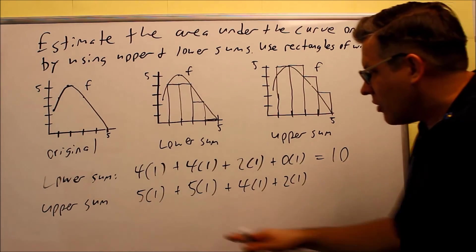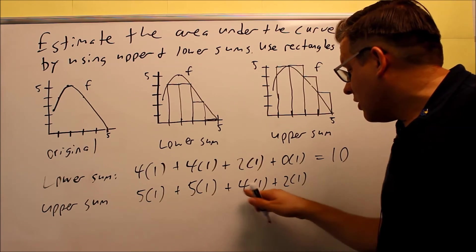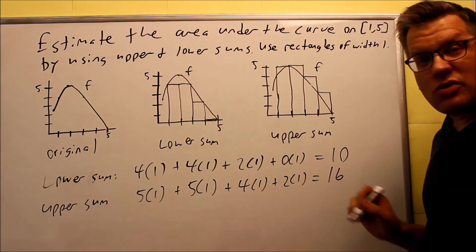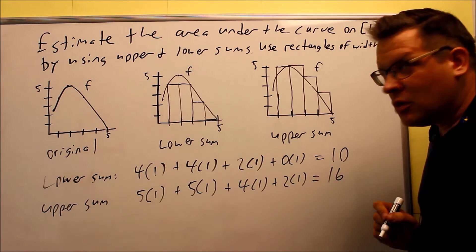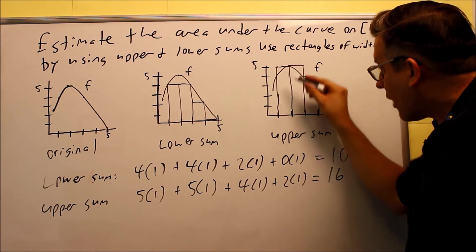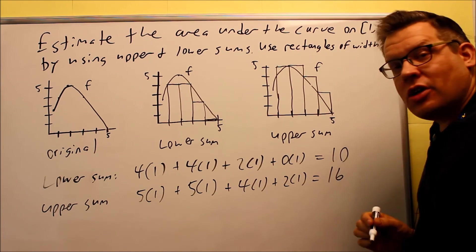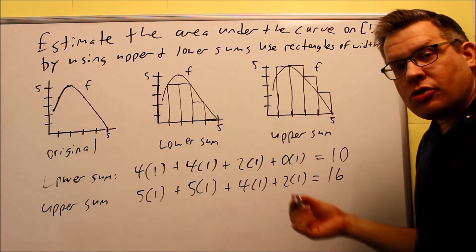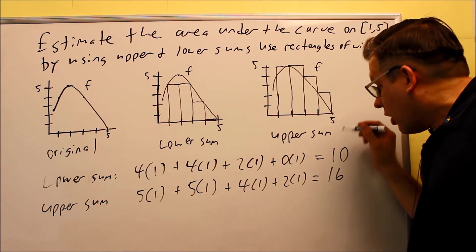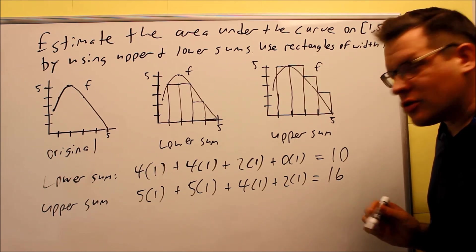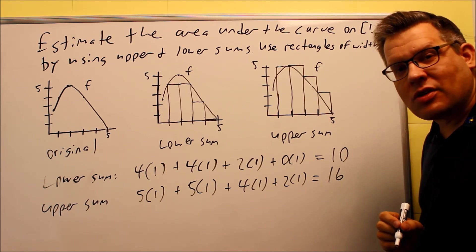Let's multiply and add this together. 5 plus 5, 10, 14 plus 2 is 16. So, we see there's a pretty big difference between the lower sum and the upper sum. We know that the true, actual area on this curve has to be somewhere between 10 and 16. But, again, what we're doing, we're just estimating. We're getting a ballpark range so we can tell approximately what the true area is going to be. It'll be somewhere between 10 and 16.